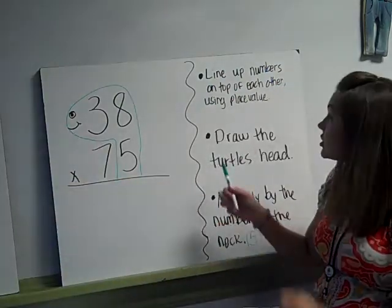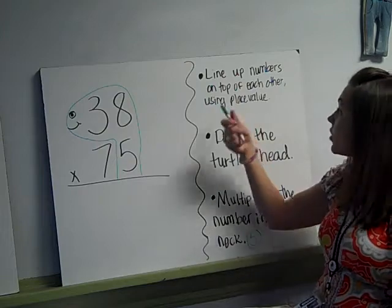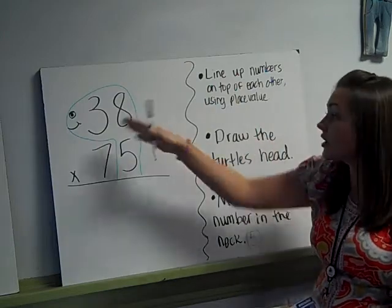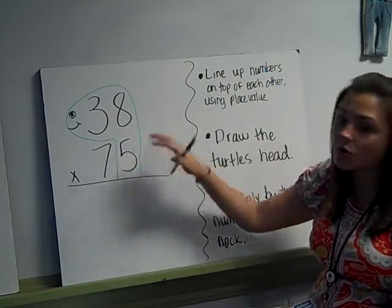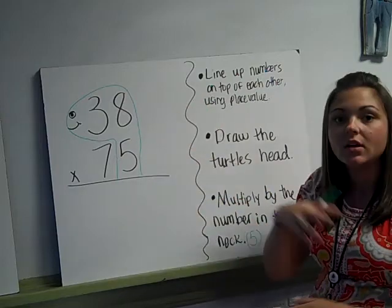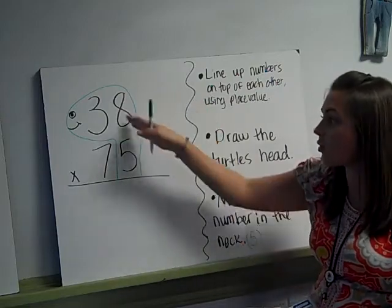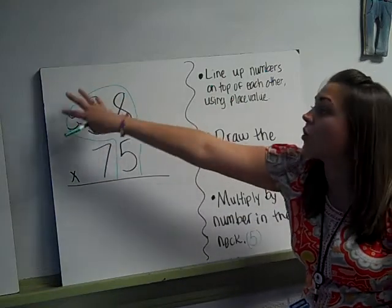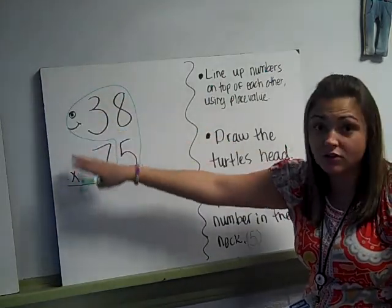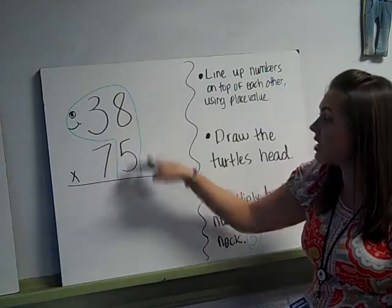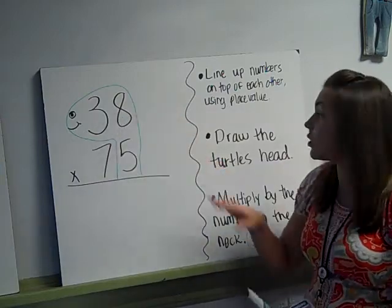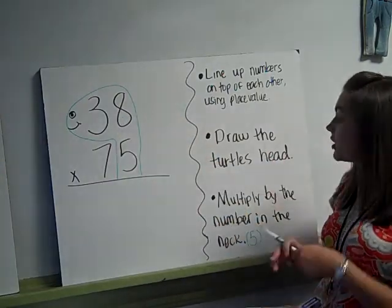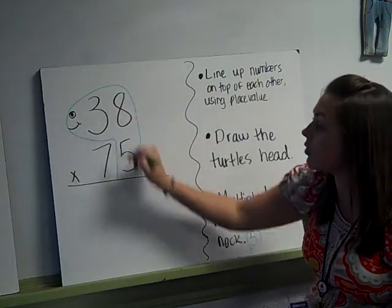So my first step that I want to do is line up the two numbers according to their place value, 38 and 75. It doesn't matter which one's on top, which one's on bottom, as long as you have them lined up where the ones line up and the tens line up. Because if this was a three digit, the hundreds would have to be over here with nothing underneath it. So make sure that your numbers line up according to their place value. Then you want to draw the turtle's head, which I did here already for us.